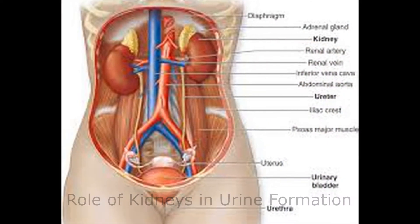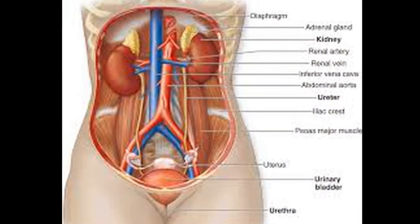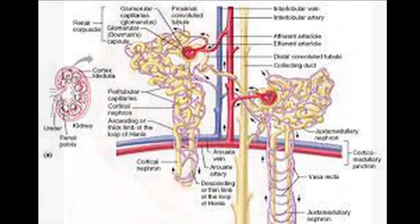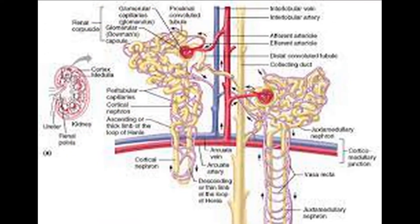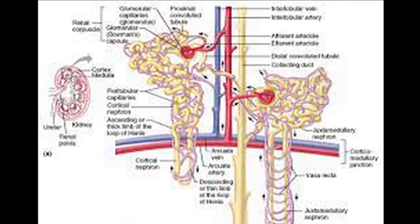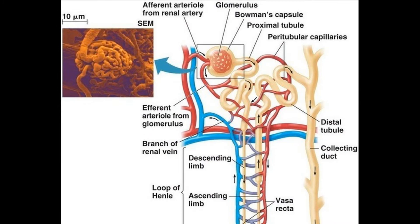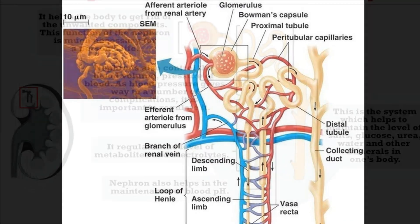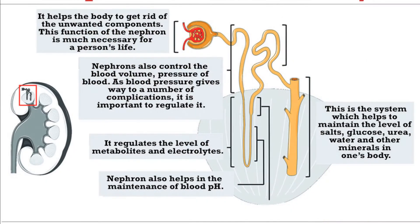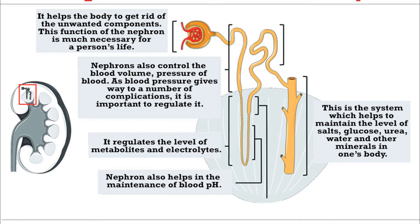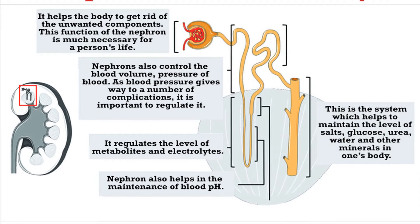Role of kidneys in urine formation: The kidneys are made up of millions of microscopic units called nephrons, which are surrounded by a network of blood capillaries. The main function of the nephrons is to filter the blood, purify it, and to produce urine.